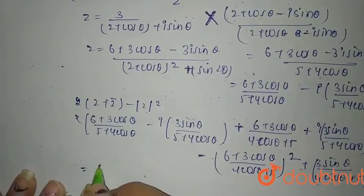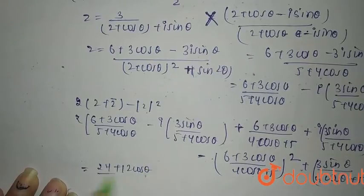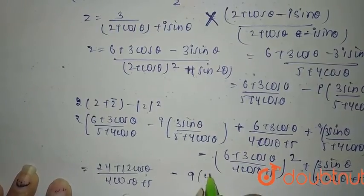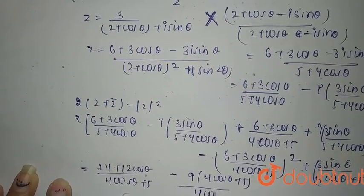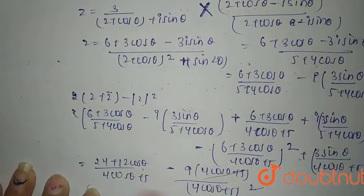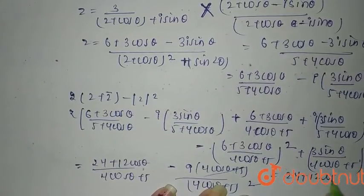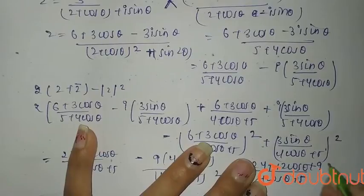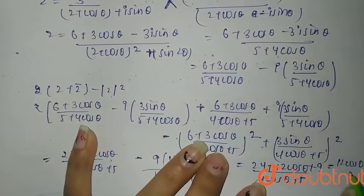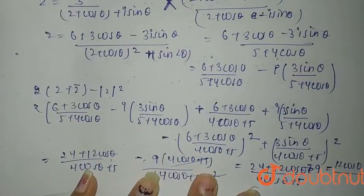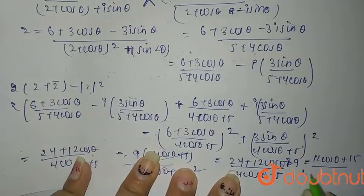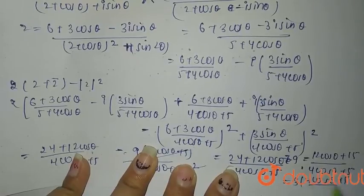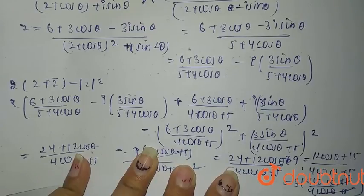When you open it, it comes out to be (24 + 12cosθ)/(4cosθ + 5) minus 9·(4cosθ + 5)/(4cosθ + 5)². This simplifies to (24 + 12cosθ − 9) divided by (4cosθ + 5), which is (12cosθ + 15)/(4cosθ + 5). Taking 3 as common, you get 3·(4cosθ + 5)/(4cosθ + 5). This cancels, so the value is 3. Your answer is 3.